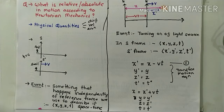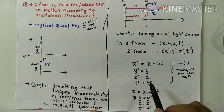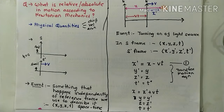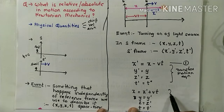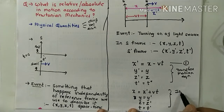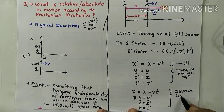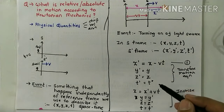These transformation equations tell us: if we know x, y, z, and t, then we can easily find x-dash, y-dash, z-dash, and t-dash. For example, if we know the values for Anil who is at rest, we can find the values for Sunil using these transformations — or vice versa. Knowing the values for Sunil, we can find the values for Anil's frame. This reverse set is called the inverse transformation equations. One set is the transformation equations and the other is the inverse transformation equations.